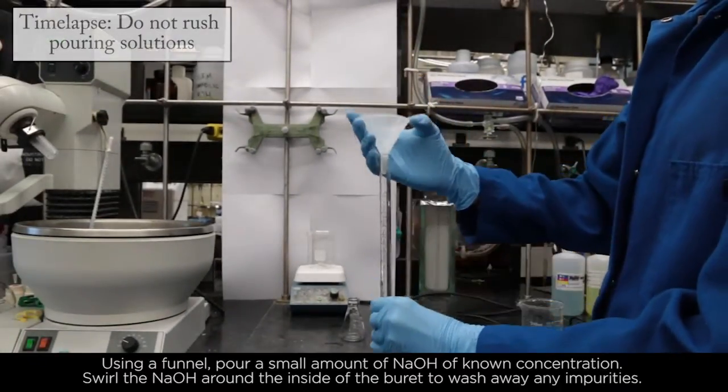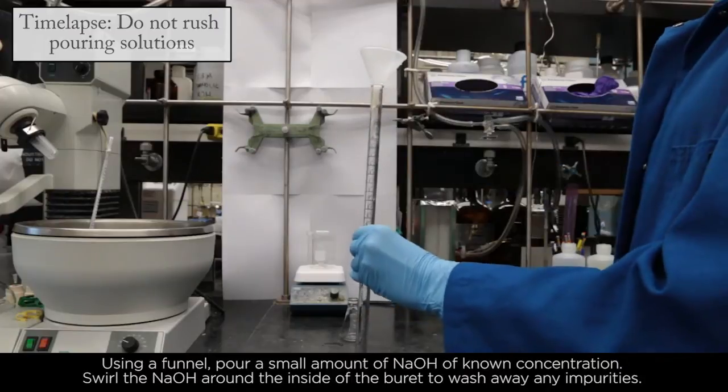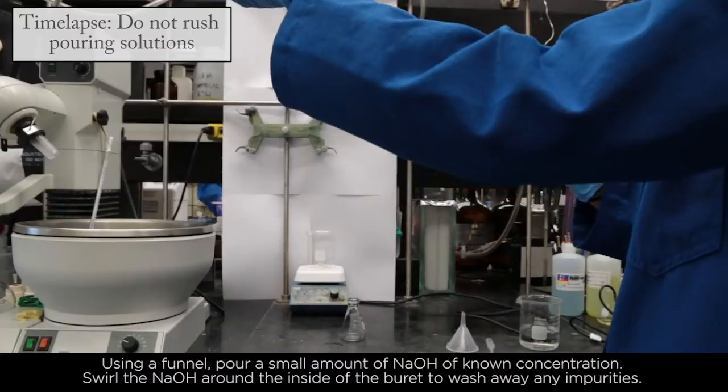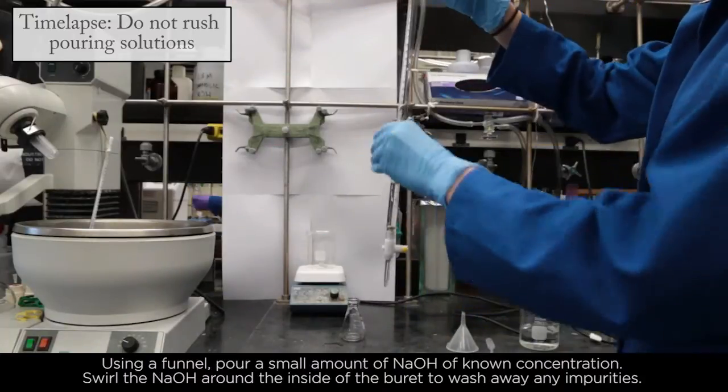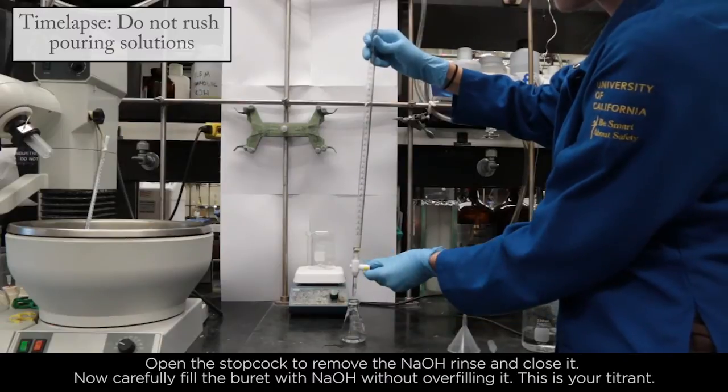Using a funnel, pour a small amount of NaOH of known concentration. Swirl the NaOH around the inside of the burette to wash away any impurities. Open the stopcock to remove the NaOH rinse and close it.